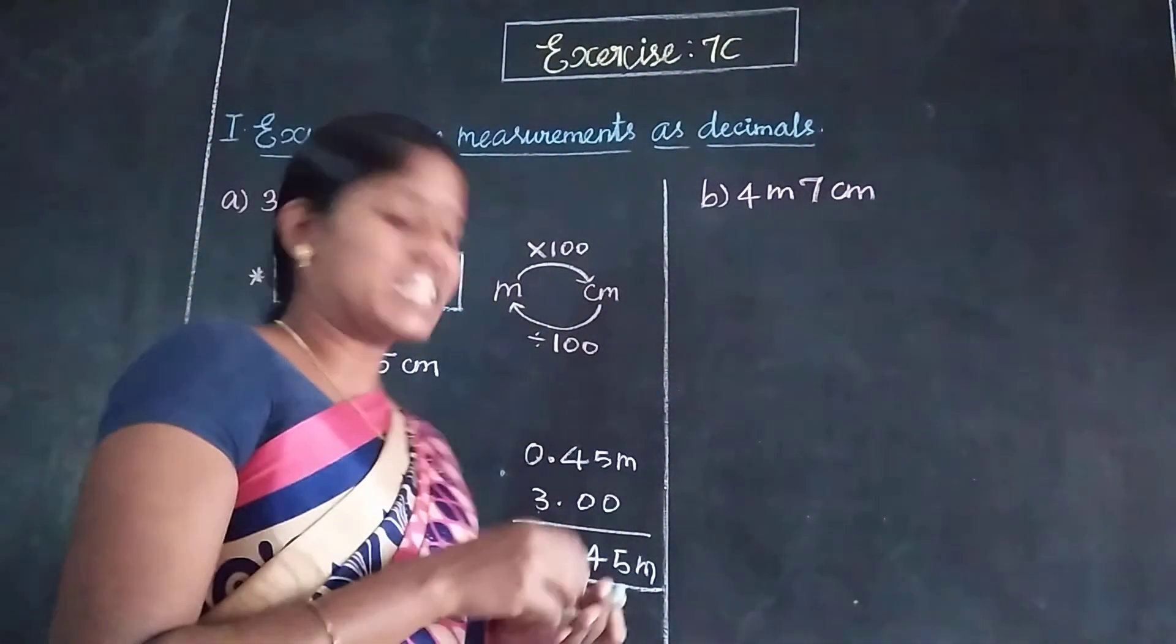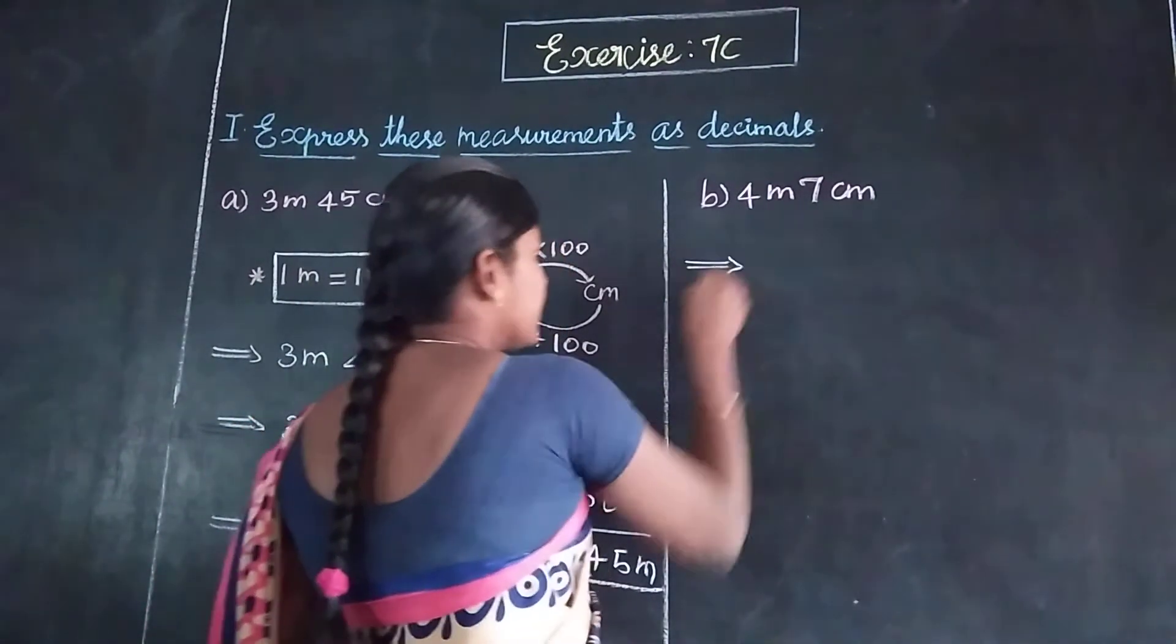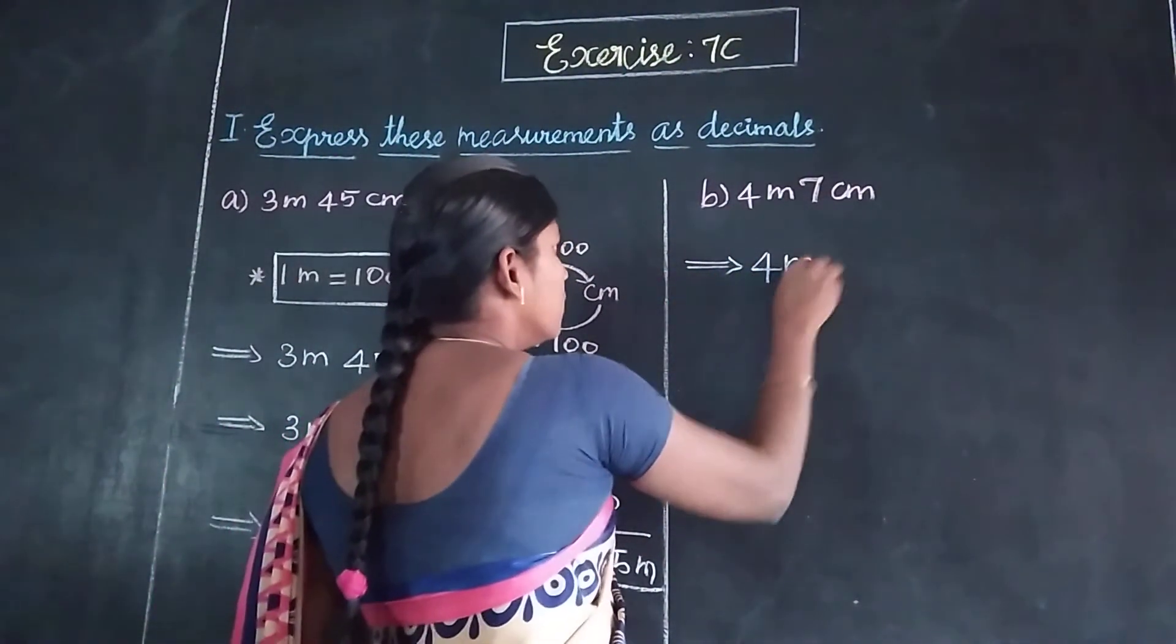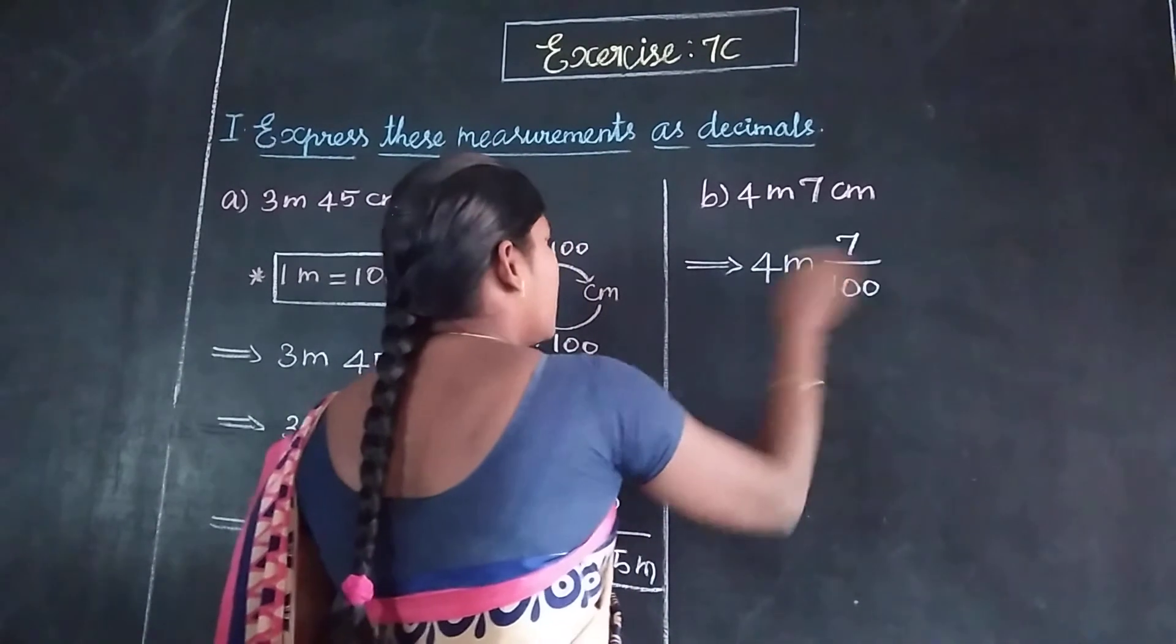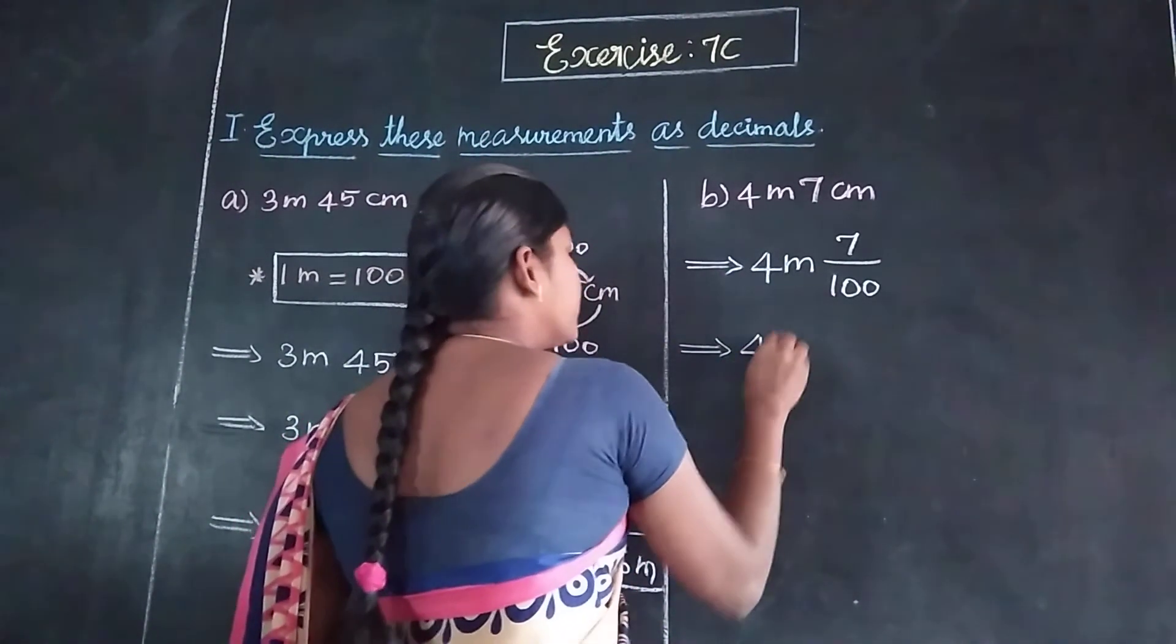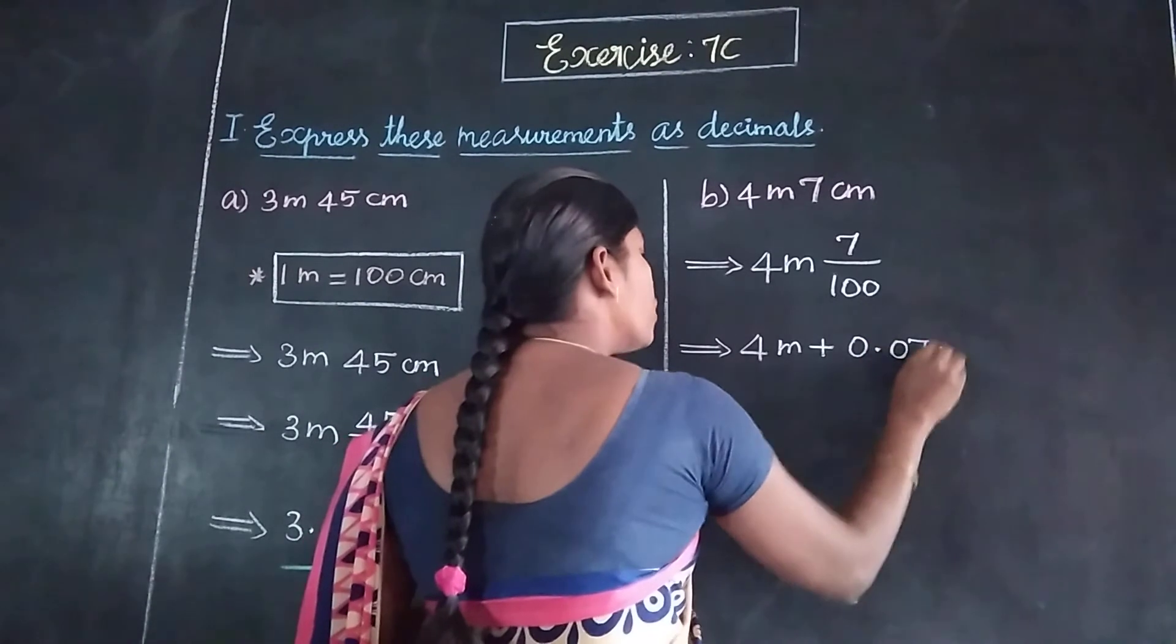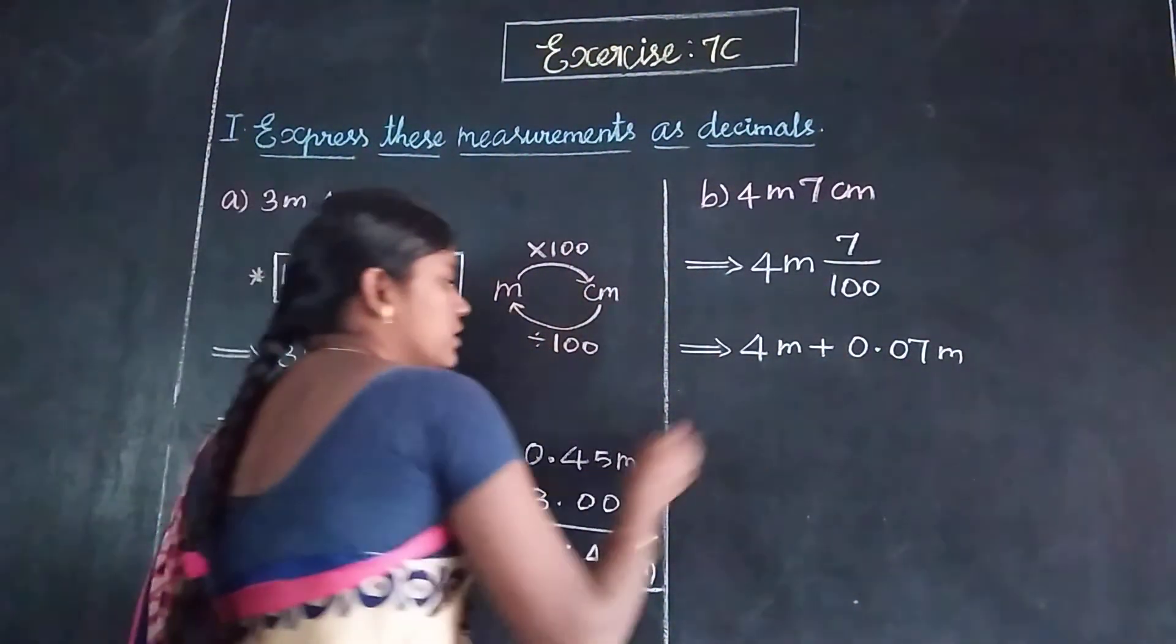Next: 4 meters 7 centimeters. Meter to centimeter, we divide. 4 meters plus 7 centimeters. 7 by 100 equals, with 2 decimal places, 0.07 meters. So the answer is 4.07 meters.